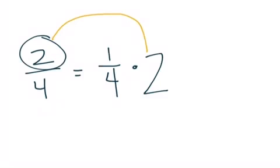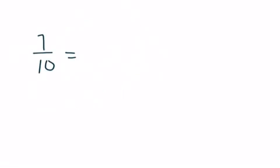So this numerator is your whole number. Your denominator is part of your unit fraction. It's the same thing over and over.